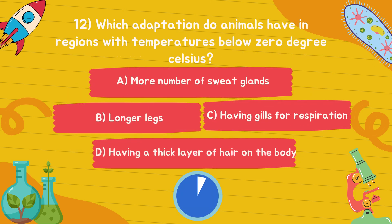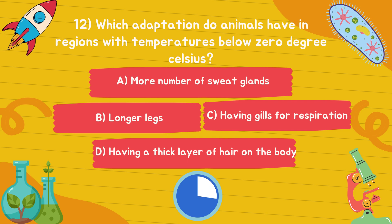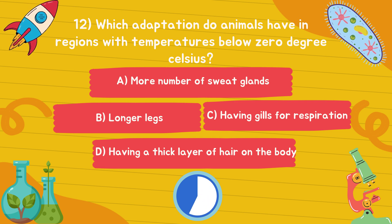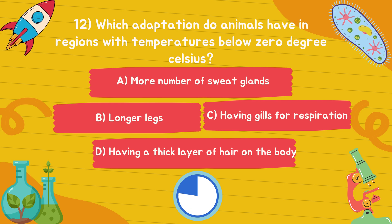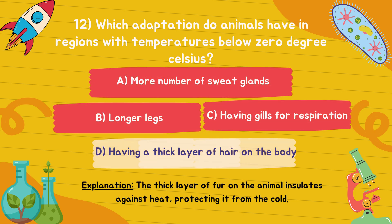Which adaptation do animals have in regions with temperatures below 0 degrees Celsius? Answer is option D, having a thick layer of hair on the body.